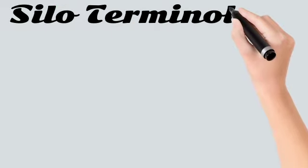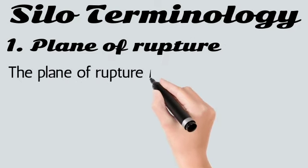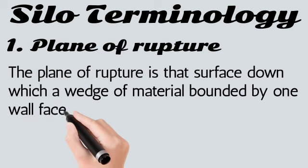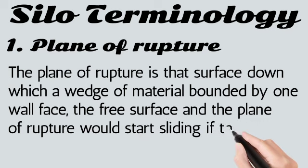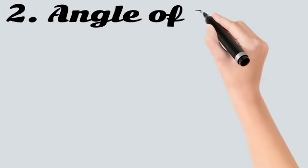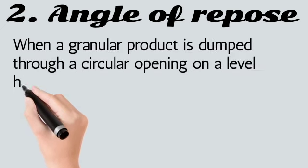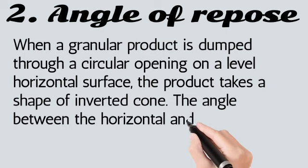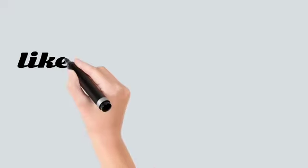Silo terminology. Plane of rupture: The plane of rupture is that surface down which a wedge of material bounded by one wall face, the free surface, and the plane of rupture would start sliding if the bounding wall were to move. When a granular product is dumped through a circular opening on a level horizontal surface, the product takes the shape of an inverted cone. The angle between the horizontal and the inclination of the slope is called the angle of repose.